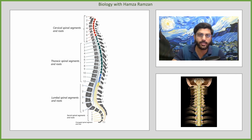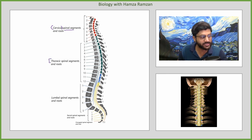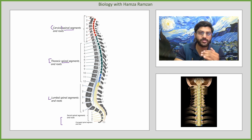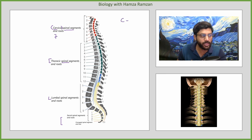There are four different sections of the vertebral column. The first section is the cervical section. In the cervical region, there are a total of 7 vertebrae, but there are 8 spinal nerves in the cervical region. This is a unique thing to understand.